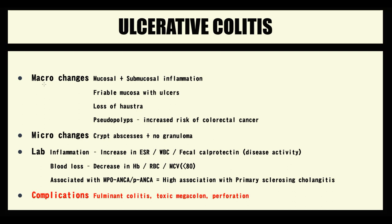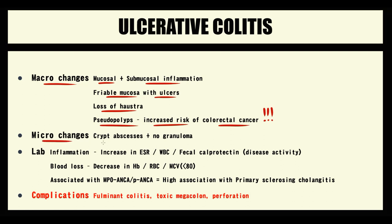To summarize, ulcerative colitis causes macroscopic changes including mucosal and submucosal inflammation, mucosal friability, loss of haustra, and pseudopolyps that greatly increase the risk of colorectal carcinoma. It also causes microscopic changes: on histology we can diagnose crypt abscesses, which are the hallmark of ulcerative colitis, but we do not see any granulomas — granulomas are the specific feature of Crohn's disease.